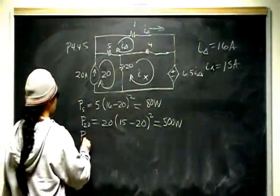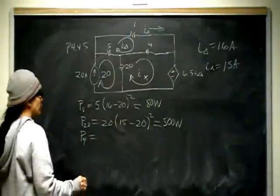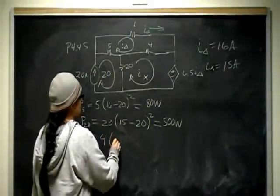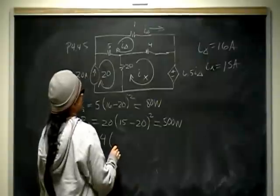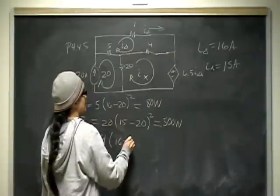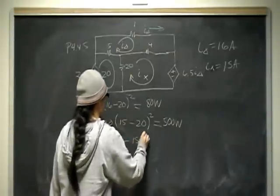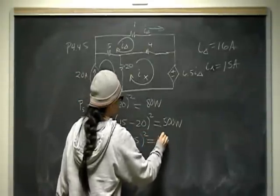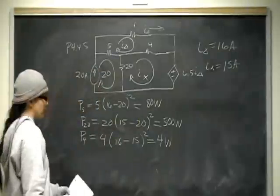And then the P, the 4, the power absorbed by the 4 ohm resistor is going to be 4, that's the R. The I squared is going to be I delta, which is 16 minus I X, which is 15 quantity squared. So that circuit element absorbs 4 watts worth of energy.